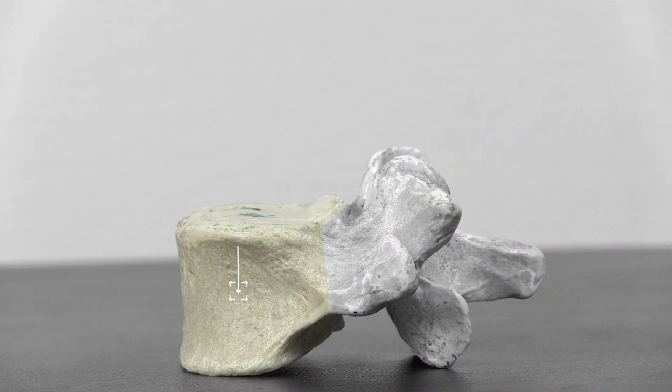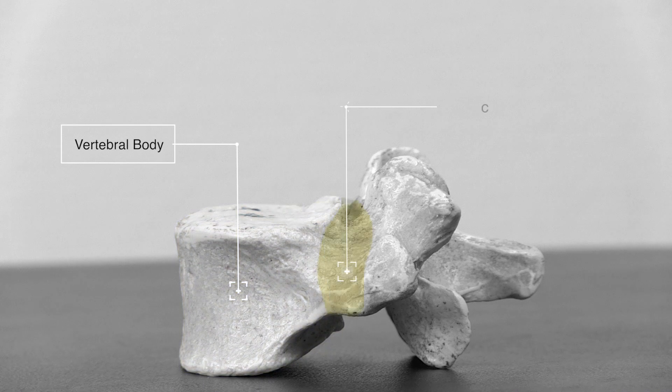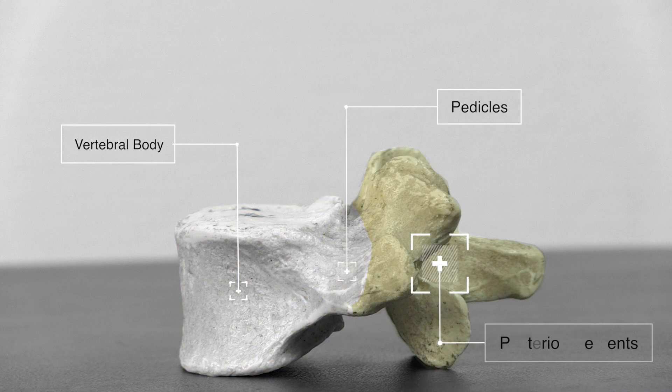Hi and welcome back to Physiotutors. Conceptually, the lumbar vertebra may be divided into three different areas: the vertebral body, the pedicles, and the posterior elements.